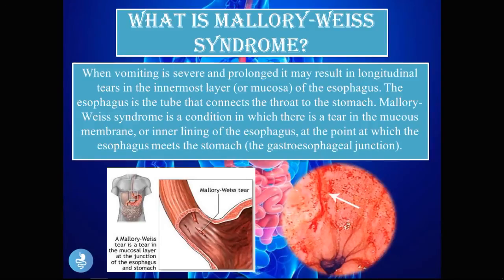longitudinal tear in the innermost layer, or the mucosa, of the esophagus. The esophagus is the tube that connects the throat to the stomach. Mallory-Weiss syndrome is a condition in which there is a tear in the mucosal membrane at the point where the esophagus meets the stomach — the gastroesophageal junction. Mallory-Weiss tears are specific because they occur at this gastroesophageal junction.